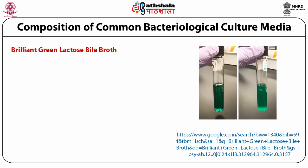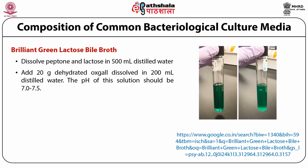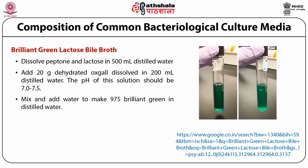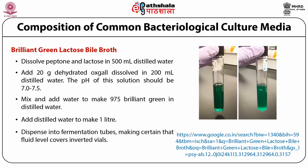The Brilliant Green Lactose Bile Broth is prepared by dissolving peptone and lactose in 500 ml of distilled water, then adding 20 grams of dehydrated ox gall dissolved in 200 ml of distilled water. The pH of this solution should be 7 to 7.5. Mix the sample and add brilliant green in distilled water, then add distilled water to make up to 1 litre. Dispense into fermentation tubes ensuring the fluid level covers inverted vials, then autoclave for 15 minutes at 121°C. Final pH is maintained at 7.2 ± 0.1.